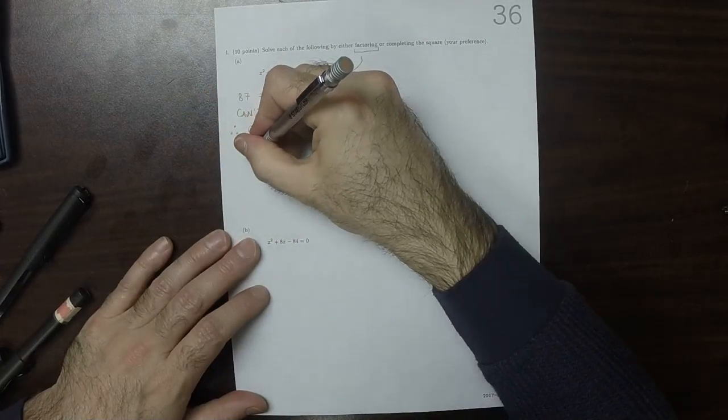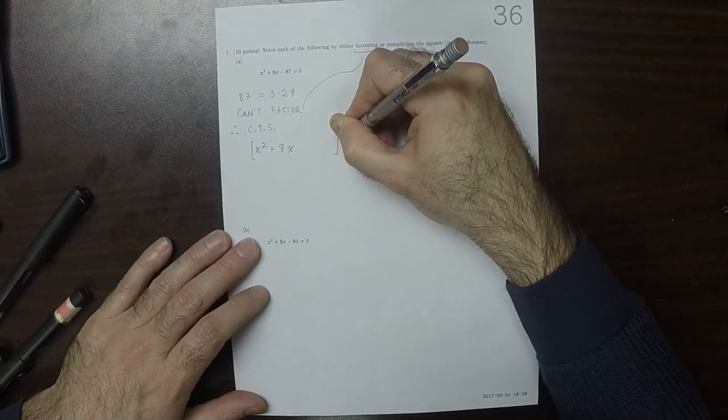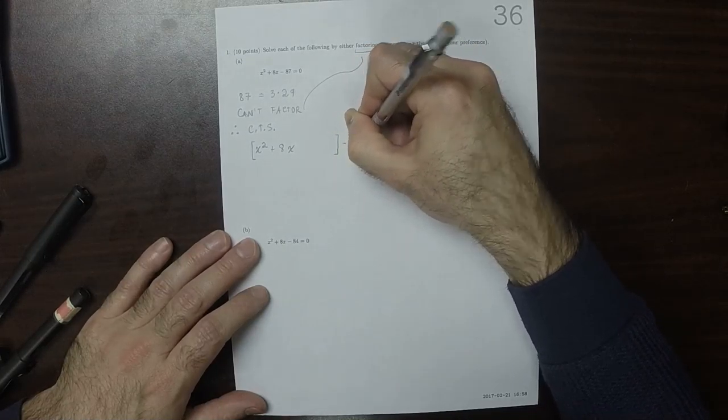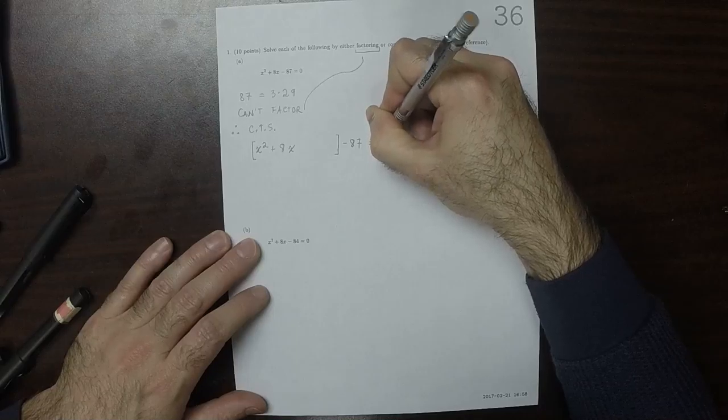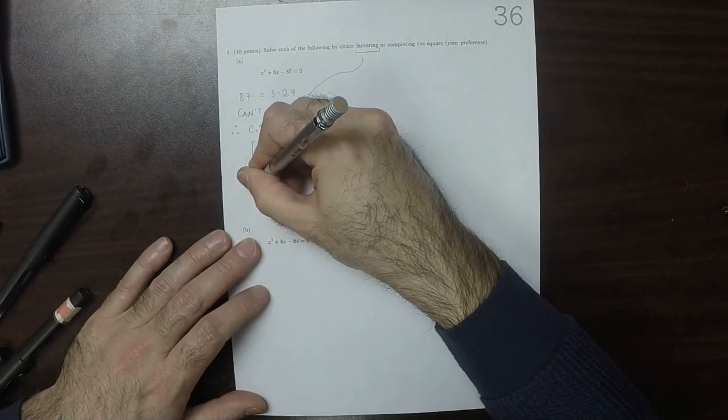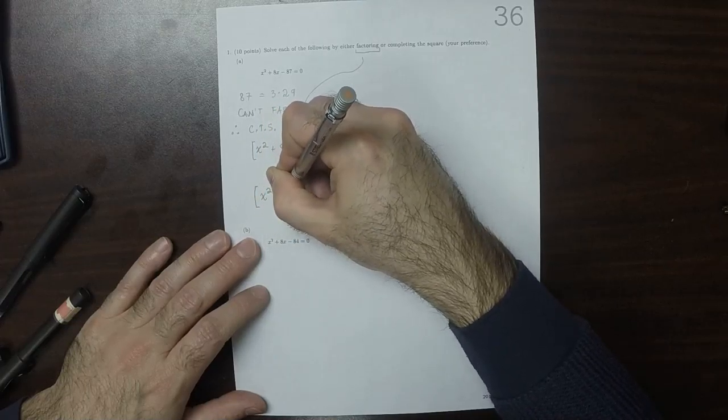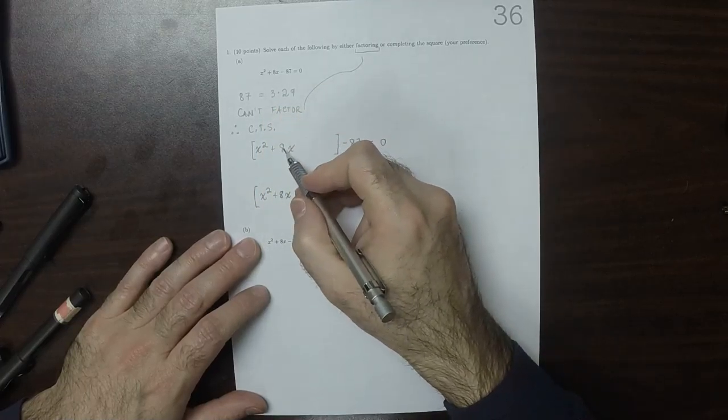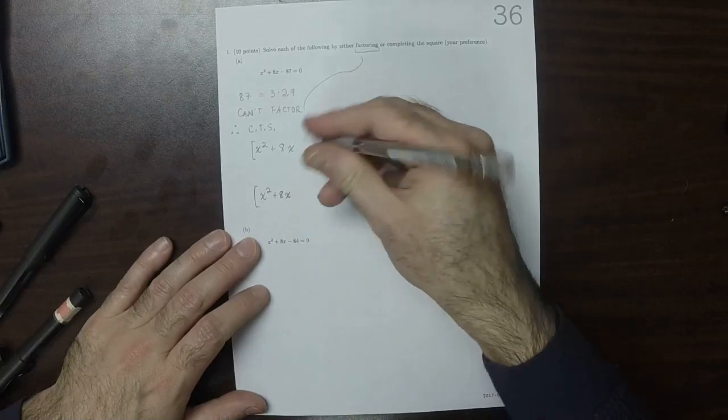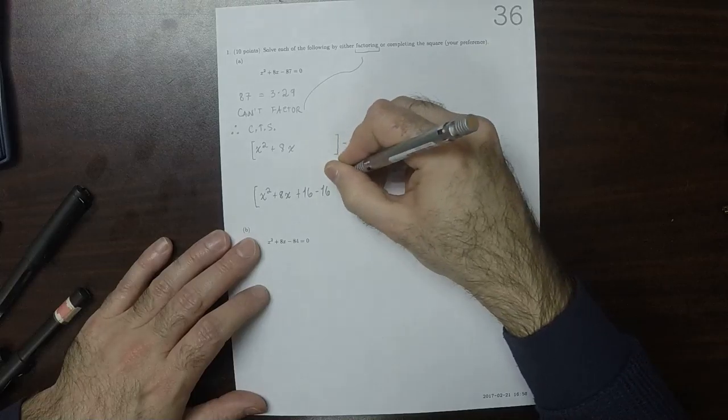Okay. So then collect all the terms with x into a group. Exclude all the terms without x, outside the group. Now we're going to add and subtract the same amount. So half of 8 is 4. Squared is 16. So we're going to add 16 and subtract 16.